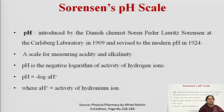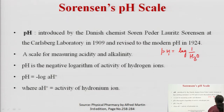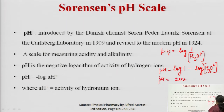The concept of pH was given by a Danish chemist, Søren Peder Lauritz Sørensen. According to him, pH is equal to the reciprocal of log of hydronium ion concentration. If we rearrange this equation, it becomes log 1 minus log of hydronium ion concentration. Since log 1 is 0, pH is equal to minus log of hydronium ion concentration.